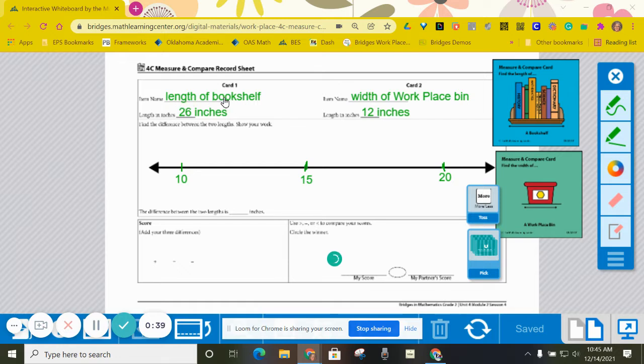So I have length of bookshelf and then card number two, item name, width of workplace bin.